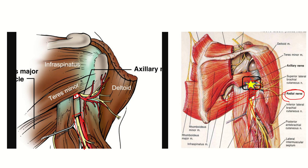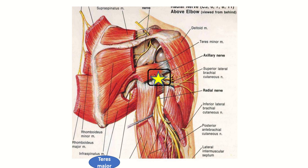In the first picture we can see the radial nerve passing below a muscle. We have to find the name of this muscle — the one that lies above the radial nerve. Looking at the diagram, we can see this muscle is teres major. The radial nerve lies inferior to the teres major, so our answer is teres major.